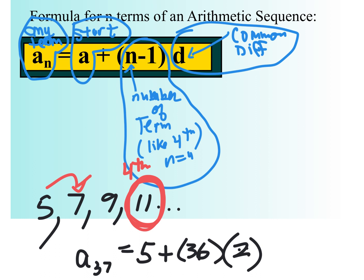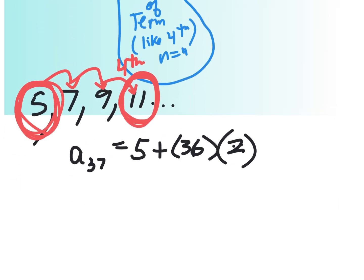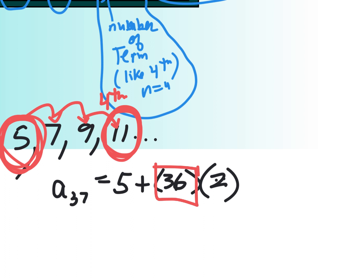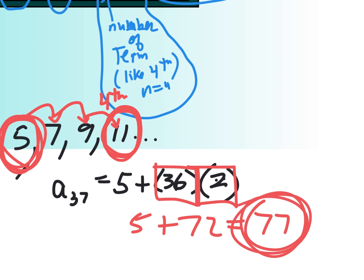I added 2 here, then here, then here — three times total — because I started with the first term. So even though I wanted the 37th term, I only add 2 thirty-six times to get there. What's 36 times 2? 72 plus 5 is 77. See how I can actually do this in my head? If you memorize that formula, you could be like 'robot kid' — someone asks the 37th term and you'd say 77. You'd seem like a genius.